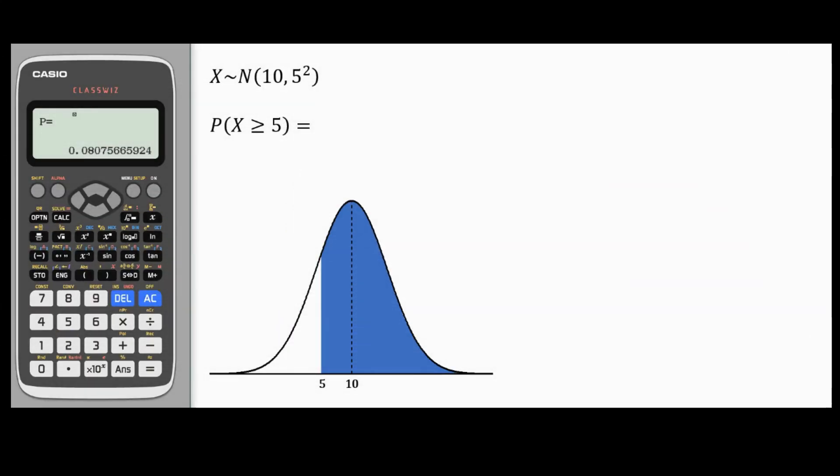In the next example, I want to find the probability X is bigger than or equal to 5. Note that normal distribution is a continuous distribution, hence it doesn't make a difference if you have bigger than 5 or bigger than or equal to 5. To find this probability, I'll press AC. Note that sigma and mu are already there. I'm not going to change them. All I have to change is lower and upper. This time, this region starts at 5.